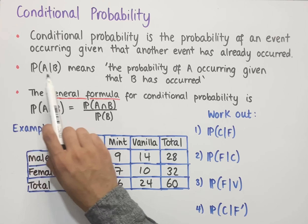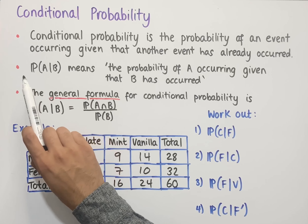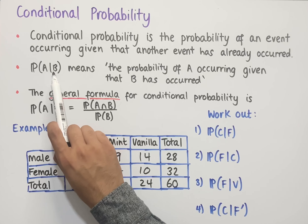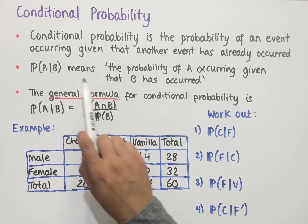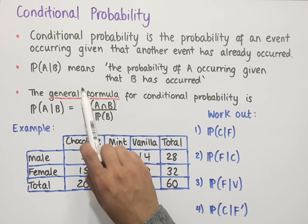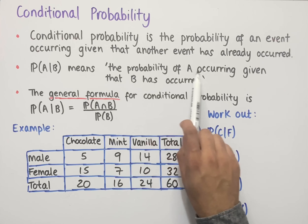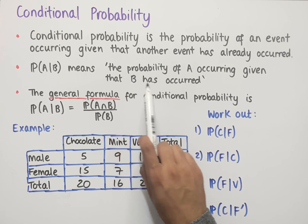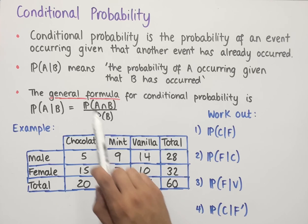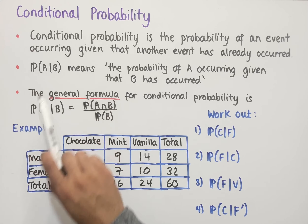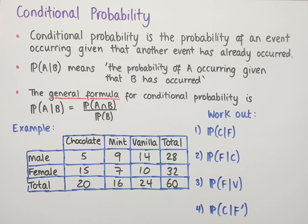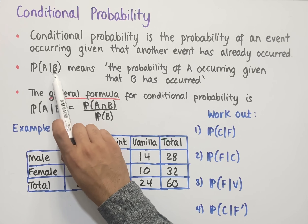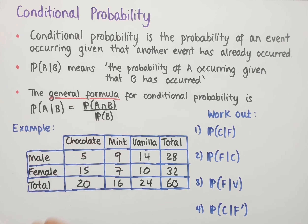We read P(A|B) as the probability of A given B. This means the probability of A occurring given that B has occurred. This is the notation we use for conditional probability, where A is some event and B is another event.